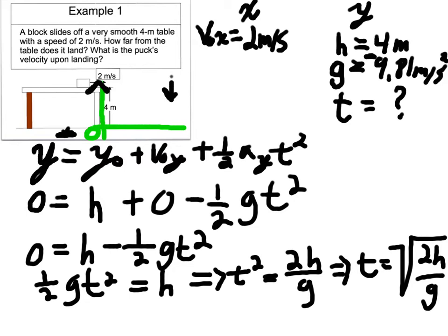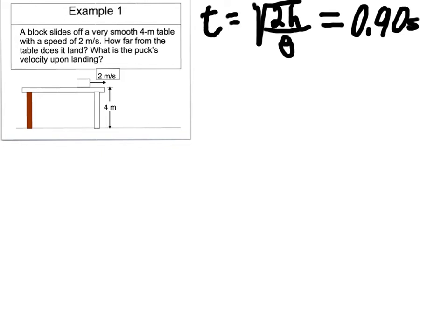And that makes the problem a lot simpler. So whenever I'm faced with a problem of finding an object falling off a table or off a cliff, the first thing I think about is time. And so that's a hint on how to solve problems like this. I need to clean up this slide, and then we'll keep going. Okay, so I cleaned up this slide and went ahead and plugged in the numbers, and I got time is 0.9 seconds. You should do that and confirm that is correct.